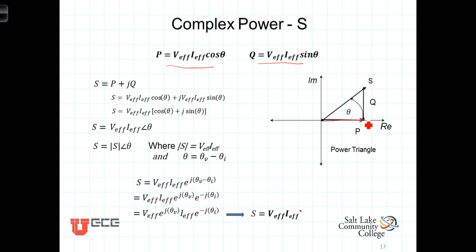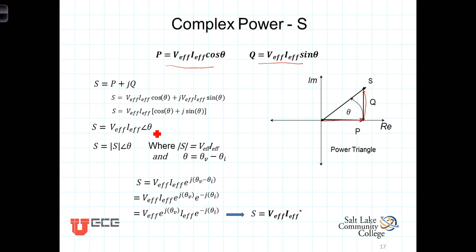When we do that in the complex plane, the real part of S is the average power and the imaginary part of S is the reactive power. Let's convert this to polar coordinates. Replacing P and Q with their definitions, we have S equal to V effective I effective cosine theta plus j times V effective I effective sine theta. Factoring out the V effective I effective, we're left with cosine theta plus j sine theta, which is just the polar angle form.